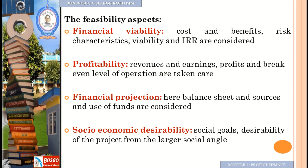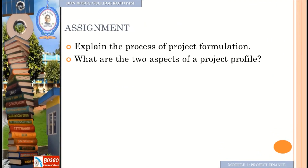In summary, the preparation of project profile includes two aspects: the preliminary aspect — product or service choice, marketing, technical, financial, and economic aspects — and the feasibility aspect — financial viability, profitability, financial projection, and social economic desirability. For questions and assignments: explain the process of project formulation and the two aspects of a project profile. Thank you for listening. Have a nice day.